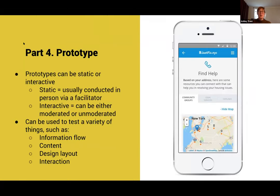I want to dive into the details of what a prototype is and looks like. Prototypes can be static or interactive. If it's a static prototype, it's probably something that you'll want to facilitate someone through navigating the specific resource. When it's an interactive prototype, there are different tools and ways that you can observe how someone is clicking through your prototype, and it helps to give insights around: are they finding the information? What are they clicking on? What's popping out to them?